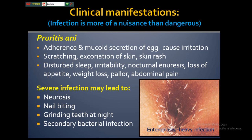Severe infection can lead to neurosis — the patient may not behave normally and may exhibit nail biting and teeth grinding at night. There is also the possibility of secondary bacterial infections. In heavy enterobiasis infections, small tiny thread-like worms can be observed all around the perianal region.